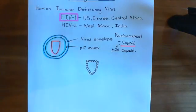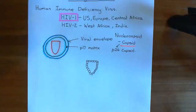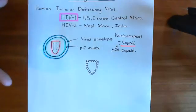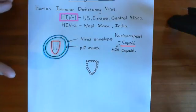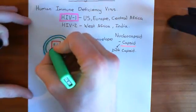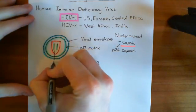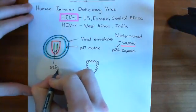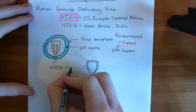Within the capsid, you have the genome of the HIV virus. The HIV virus is actually unusual for viruses - it's diploid. It has two copies of its genome, kind of like humans, who also have two copies of every single gene - a maternal copy and a paternal copy. Unlike humans, however, the HIV genome is not stored as double-stranded DNA. Instead, it's stored as single-stranded RNA. These are two pieces of single-stranded positive sense RNA.